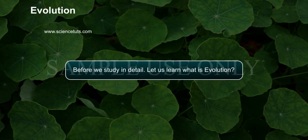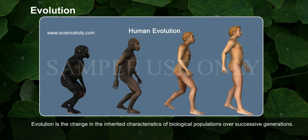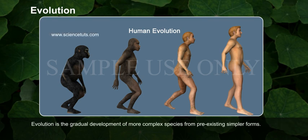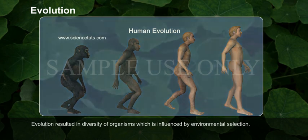Before we study in detail, let us learn what evolution is. Evolution is a change in the inherited characteristics of biological populations over successive generations. Evolution is the gradual development of more complex species from pre-existing simpler forms. Evolution resulted in the diversity of organisms, which is influenced by environmental selection.